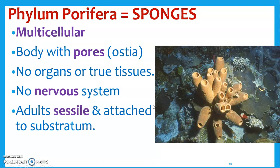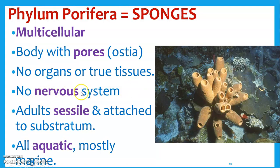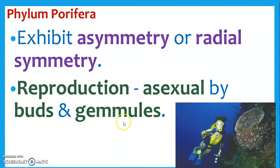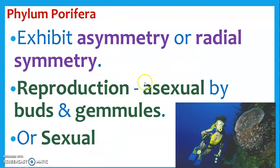Sponges are invertebrates. They actually don't really have a nervous system, which is really funky — it's very basic. They're aquatic, mostly marine, though there are some freshwater sponges, and their body is covered with pores — that's where the name Porifera comes from. They're multicellular, so they are in the animal kingdom. They can have lots of different body plans — that's what symmetry means. Are they asymmetrical or radially symmetrical? Could you cut them and they'd be in a perfect bilateral symmetry, or would they have radial symmetry like a wheel?